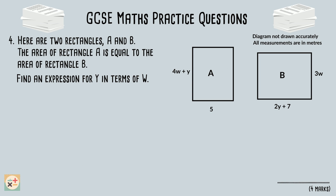For question 4, we are given two rectangles and their measurements in algebraic expressions. The question tells us that the area of rectangle A is equal to the area of rectangle B. We need to find an expression for Y in terms of W, which means we need to form an equation stating that Y is equal to an expression containing the W term. Firstly, we can form an expression for the area of each rectangle using the measurements given in the diagram — we multiply the length of one side by the length of the other side.